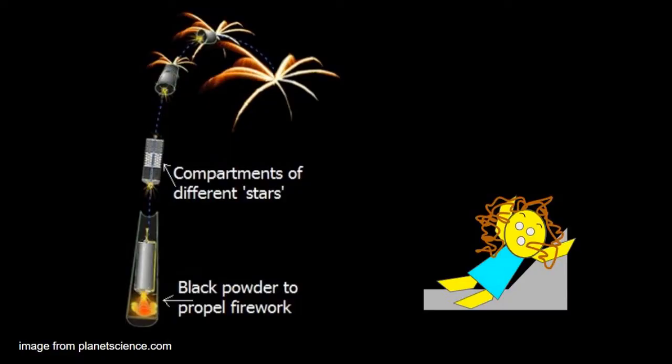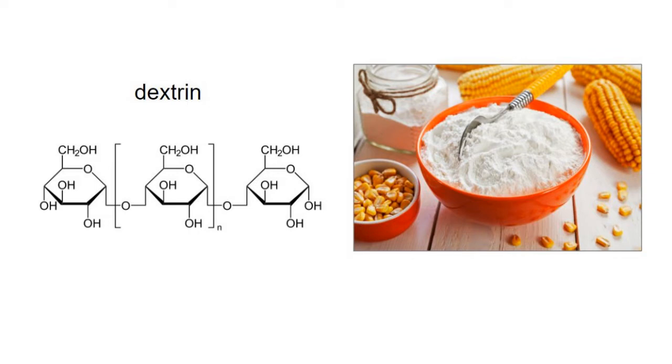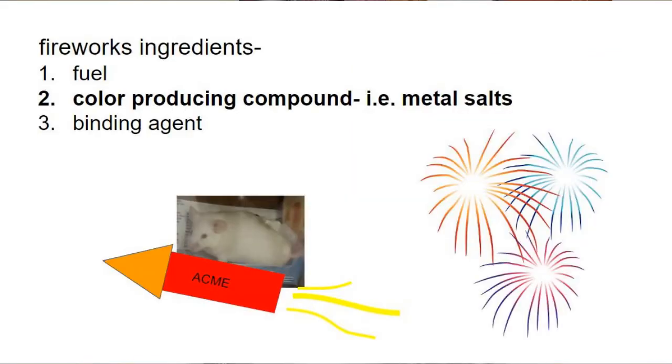Gunpowder is used to launch what are so-called stars out of a launch tube into the air. Stars are chunks of metal salts held together by a binder like dextrin found in starch. The colors are caused by the heating of these metal salts.